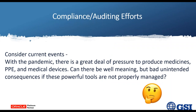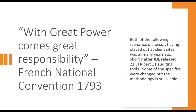Considering current events — we have a pandemic running around and many of us are working from home. There's great pressure to produce medicines, PPEs, medical devices, or other manufacturing products. Sometimes when you get into those rushes, you can skip through things faster than you should and compromise your system. Be very aware of the impacts of what we do — that's where compliance and audit teams have to stay aware. As they say, with great power comes great responsibility — that was actually the French National Convention of 1793, not Peter Parker's father from Spider-Man.